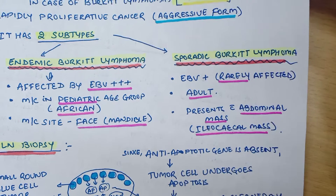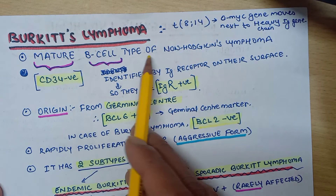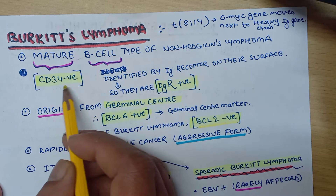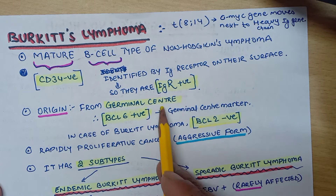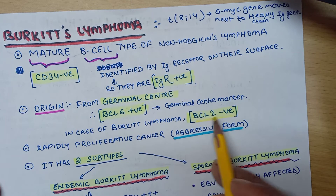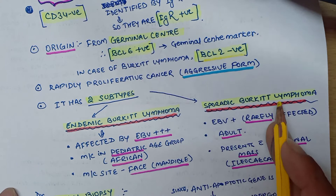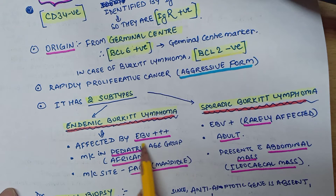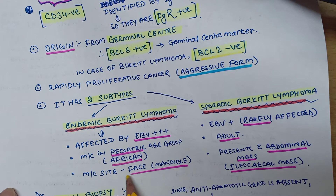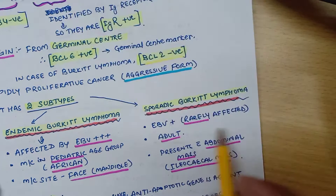To revise: Burkitt's lymphoma is a mature B-cell type, with CD34 negative, immunoglobulin receptor positive, BCL6 positive (germinal center origin), and BCL2 negative. It is rapidly proliferative and aggressive. Endemic Burkitt's lymphoma is associated with Epstein-Barr virus, more common in the pediatric age group, frequently in African populations, with the most common site being the face and mandible.